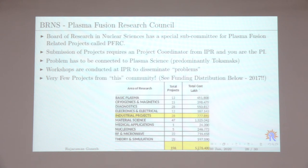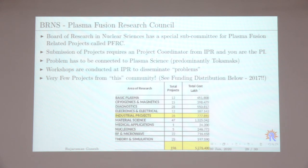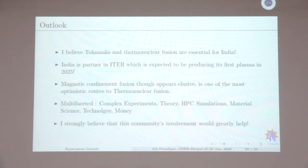Looking at 2017 data, through BRNS projects IPR has disseminated about 52 crore rupees over several years. People from material science, medical applications, and industry have participated — but there has been absolutely zero contribution from the ML, AI, or data science community. Yet we have tons and tons of data waiting to be explored.